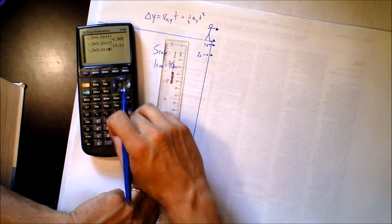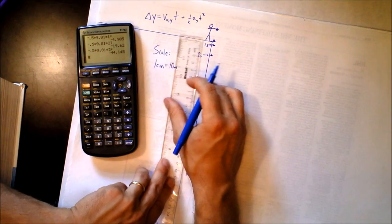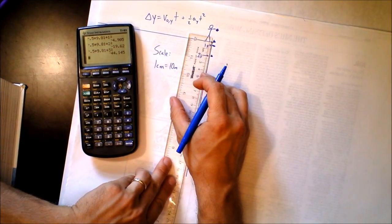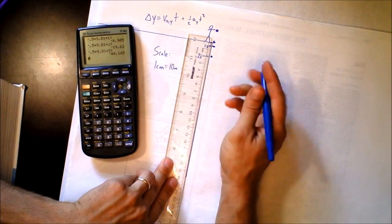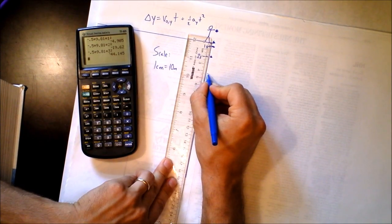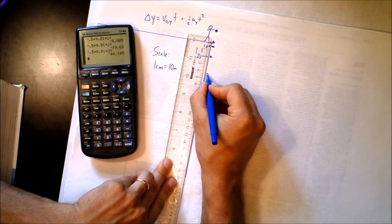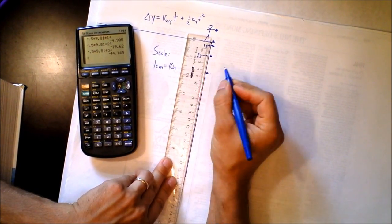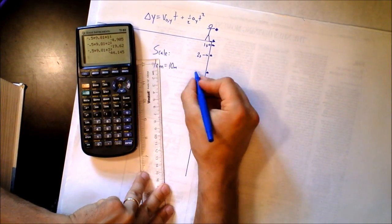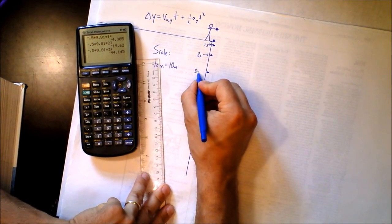So let's see where it is after three seconds. Three seconds, it's going to be 44 meters below the edge of the cliff, which is about right here. We've got our small monkey head at three seconds.